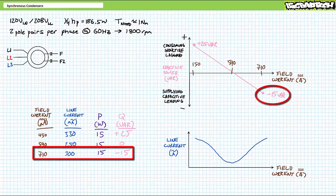On the other end, at a maximum field excitation current of 710 mA DC, the synchronous condenser draws 300 mA of line current per phase leading by around 45 degrees, consumes roughly 15 watts of real power to overcome friction, and supplies roughly negative 15 VARs. In this overexcited state, each winding appears to be capacitive in nature — this is the most negative reactive power each winding would be capable of supplying.